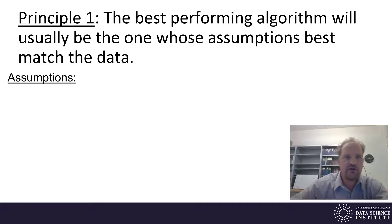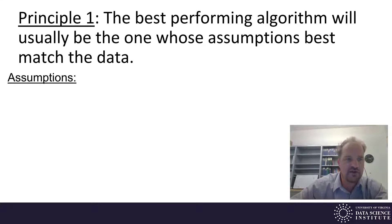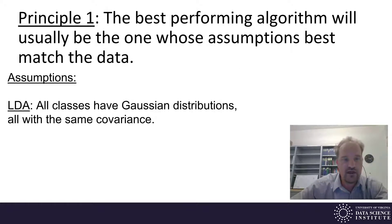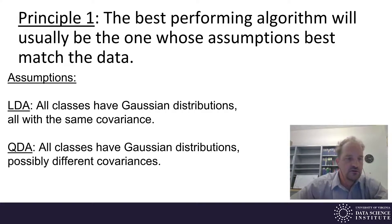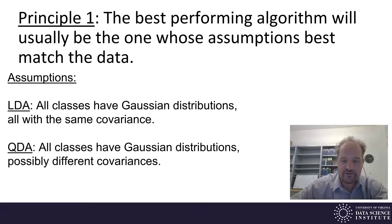First principle: the best performing algorithm will usually be the one whose assumptions best match the data. Let's think about the assumptions that have gone into some of the classification methods we've seen so far. In linear discriminant analysis, or LDA, we assume that all classes have Gaussian distributions and that all these distributions have the same covariance. In QDA, or quadratic discriminant analysis, we're still assuming the classes each have a Gaussian distribution but we're allowing those Gaussian distributions to be different among the classes.